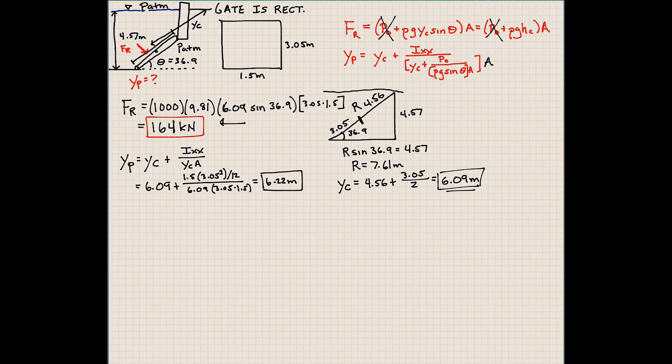So we found the magnitude of the force at 164 kilonewtons, and we also found where the force is acting at 6.22 meters relative to the surface of the water. You can express this several different ways. We also covered buoyancy and we'll talk about that more during class. For now, we're going to move on to the next chapter, which deals with Bernoulli and energy equations.